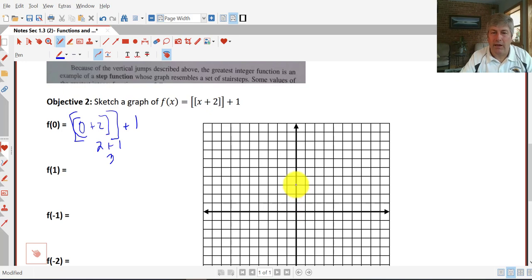When we input 0, we output 3. That's going to be 3 all the way from 0 to an input of 1. I have an open dot here at 1, and then we re-evaluate.